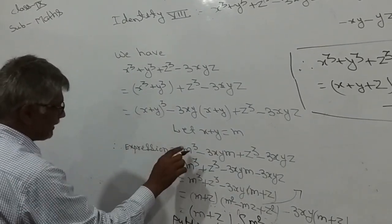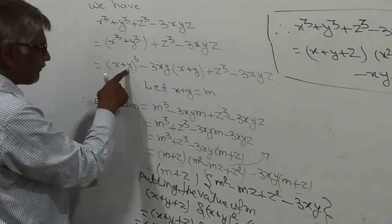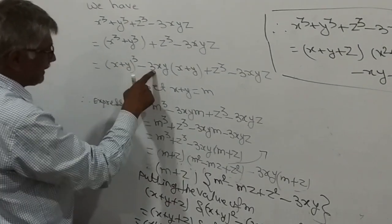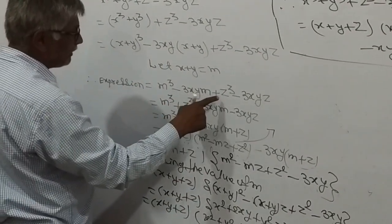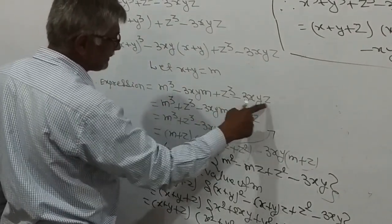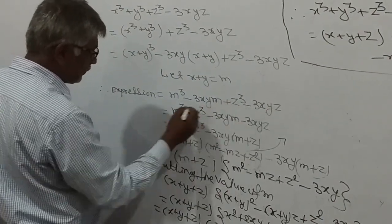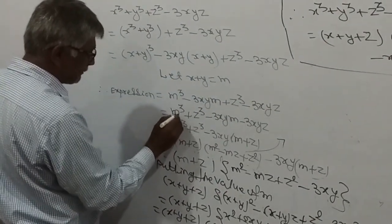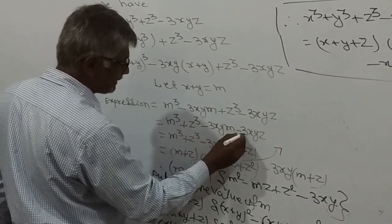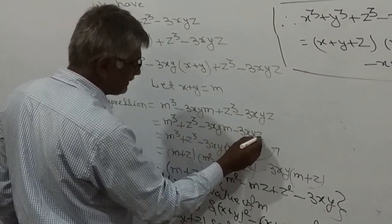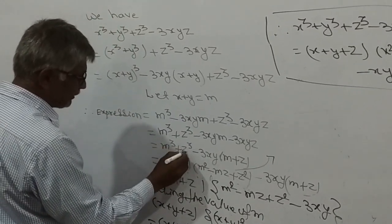Let x + y = m. So wherever x + y appears, m is placed. We get m³ − 3xy·m + z³ − 3xyz. Now bringing z³ together with m³: m³ + z³ − 3xy·m − 3xyz.